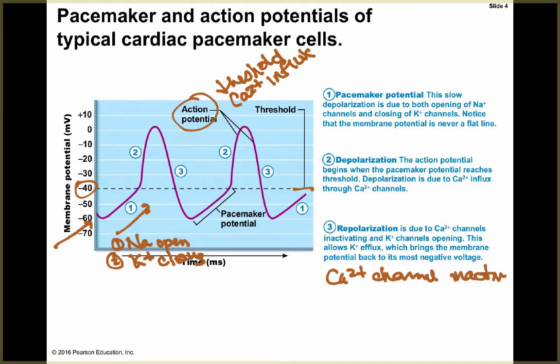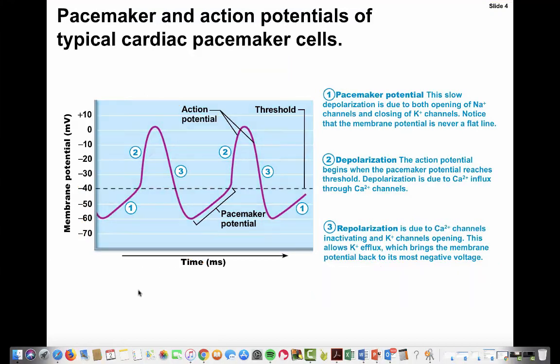Repolarization happens because calcium channels inactivate and calcium can't flow anymore. On top of this, potassium channels are opening. This allows potassium to leave, which brings the membrane potential back to around negative 60 millivolts. This is constantly happening to give the stimulus needed to tell the cells to start firing.